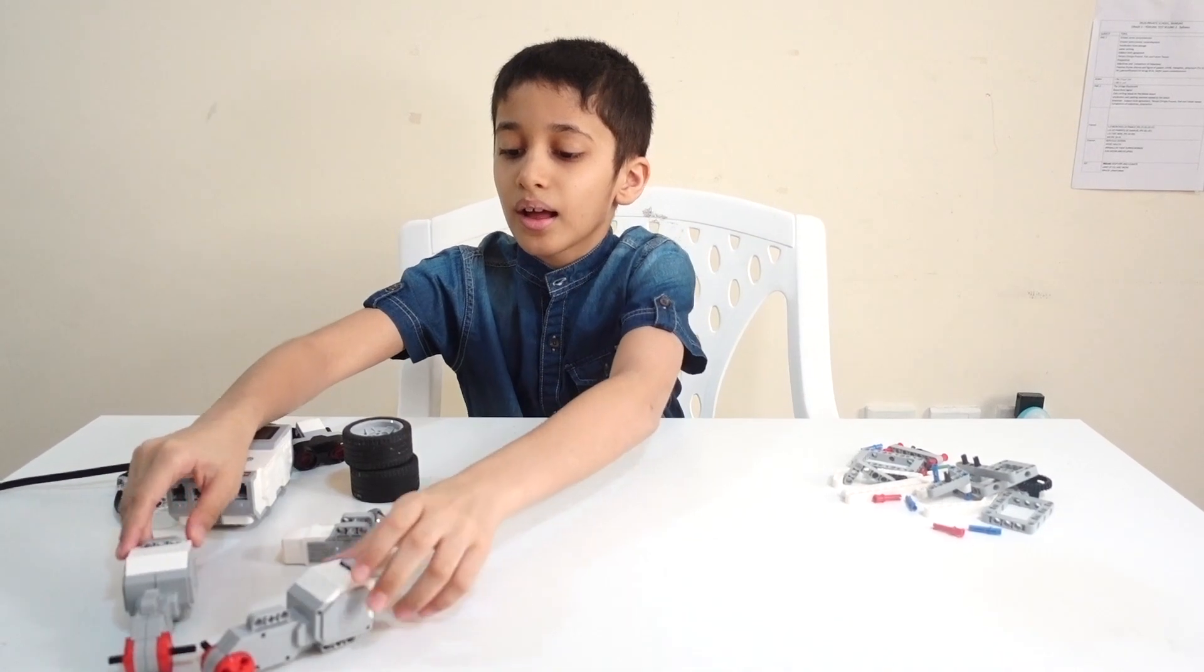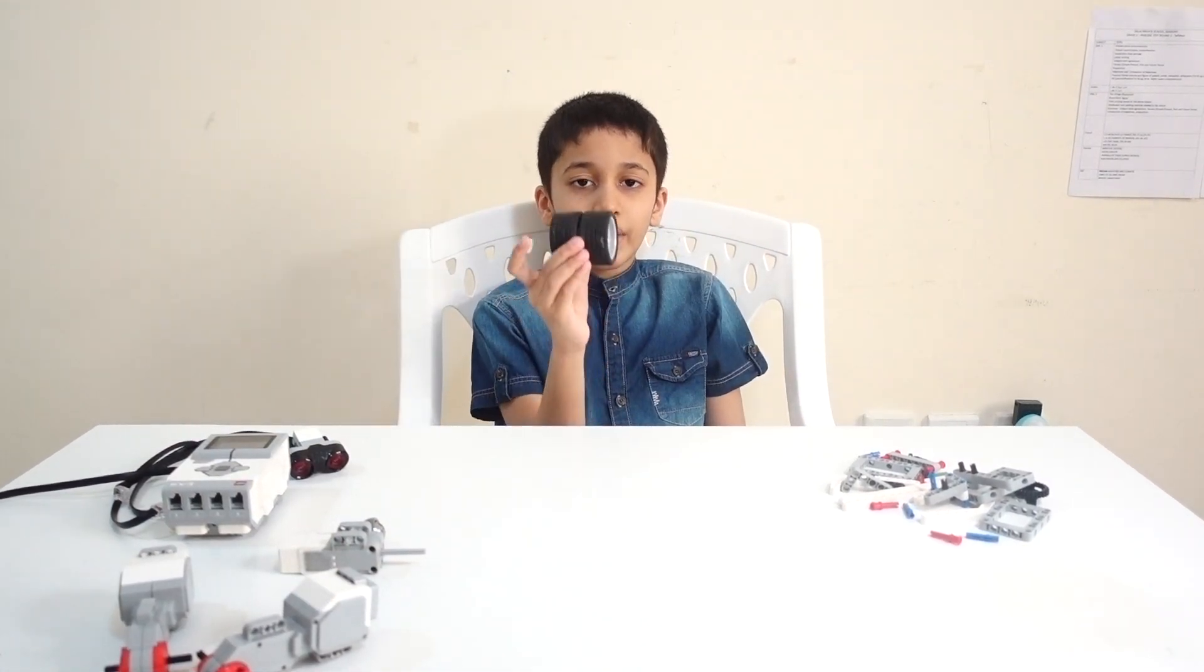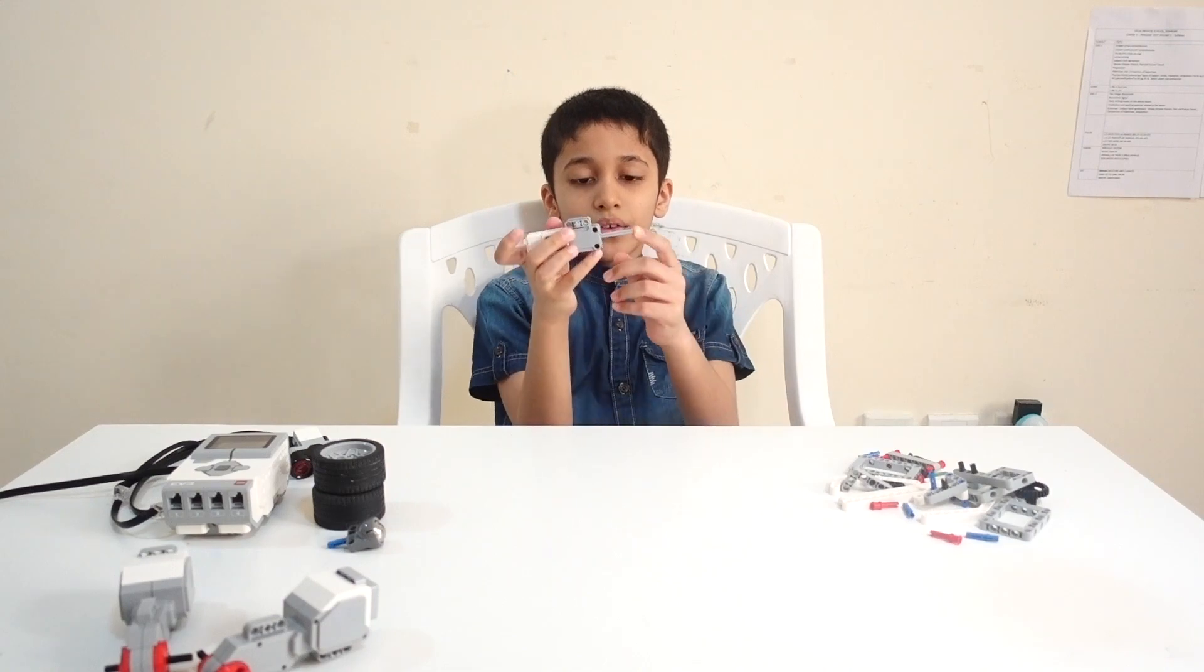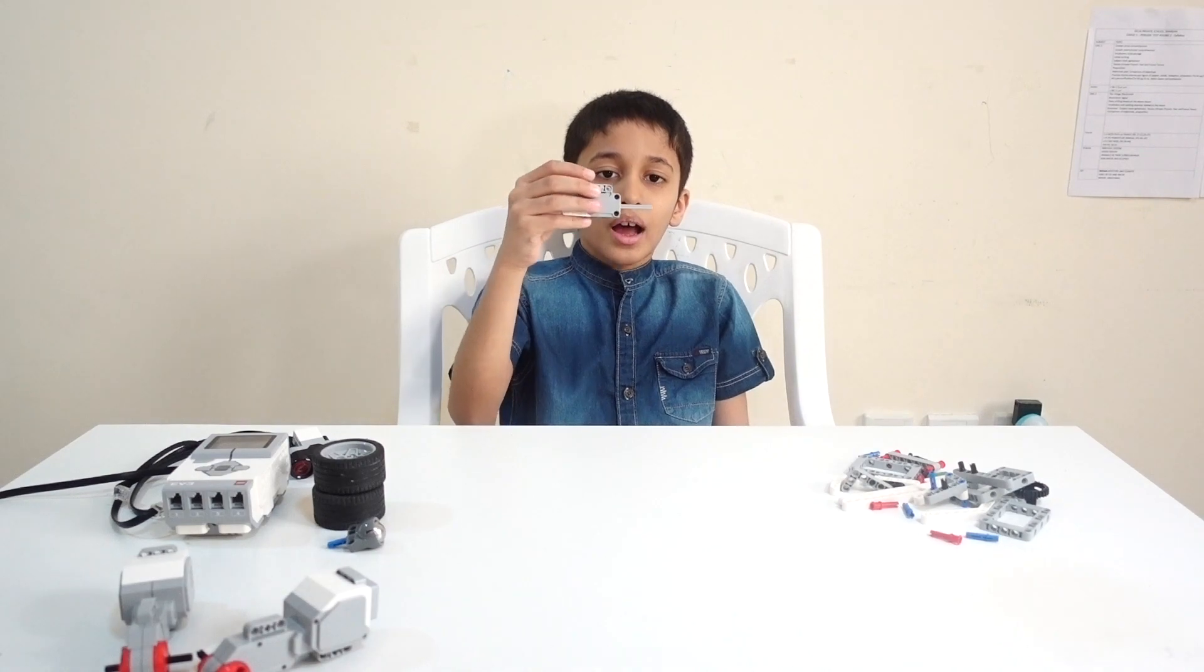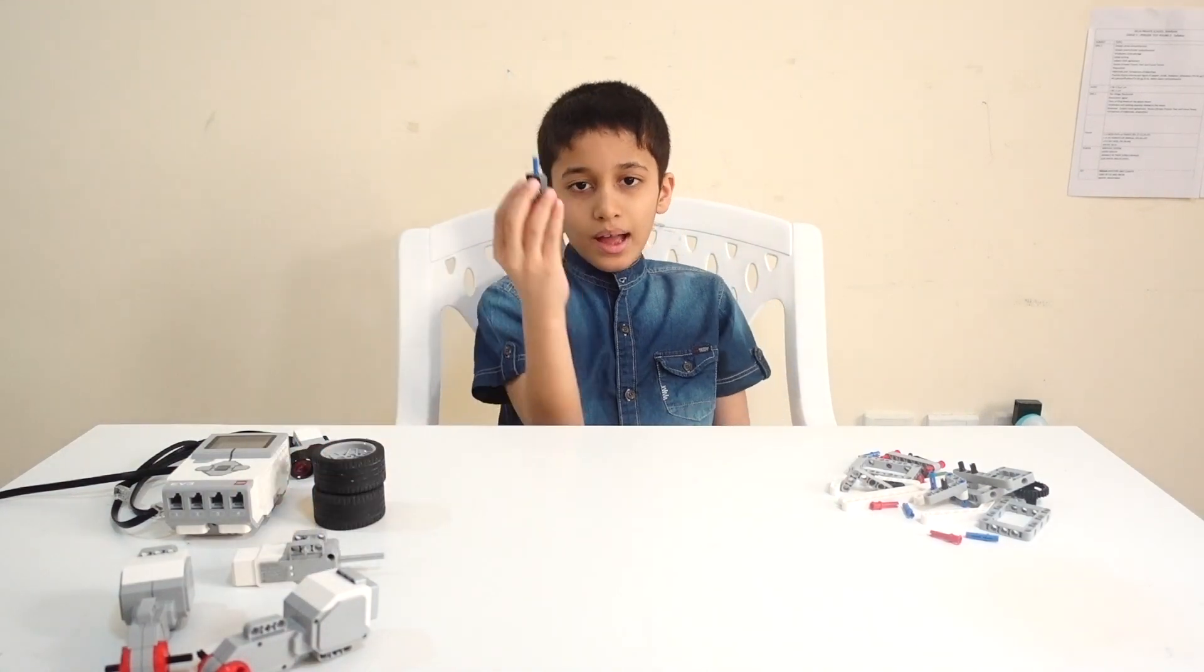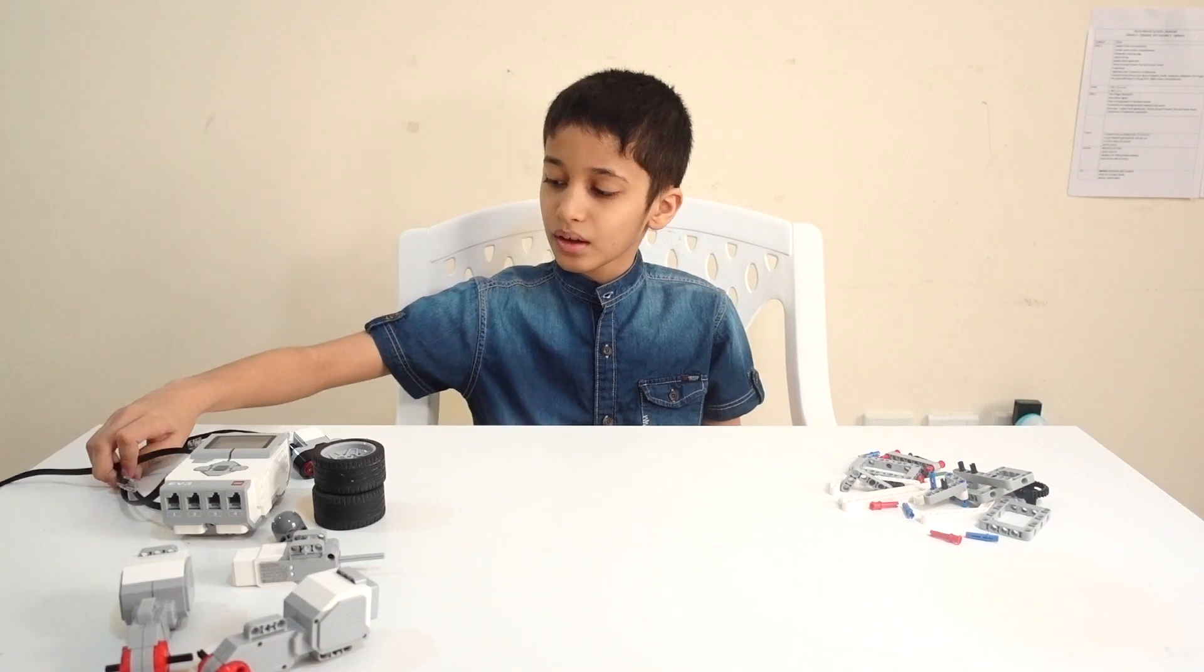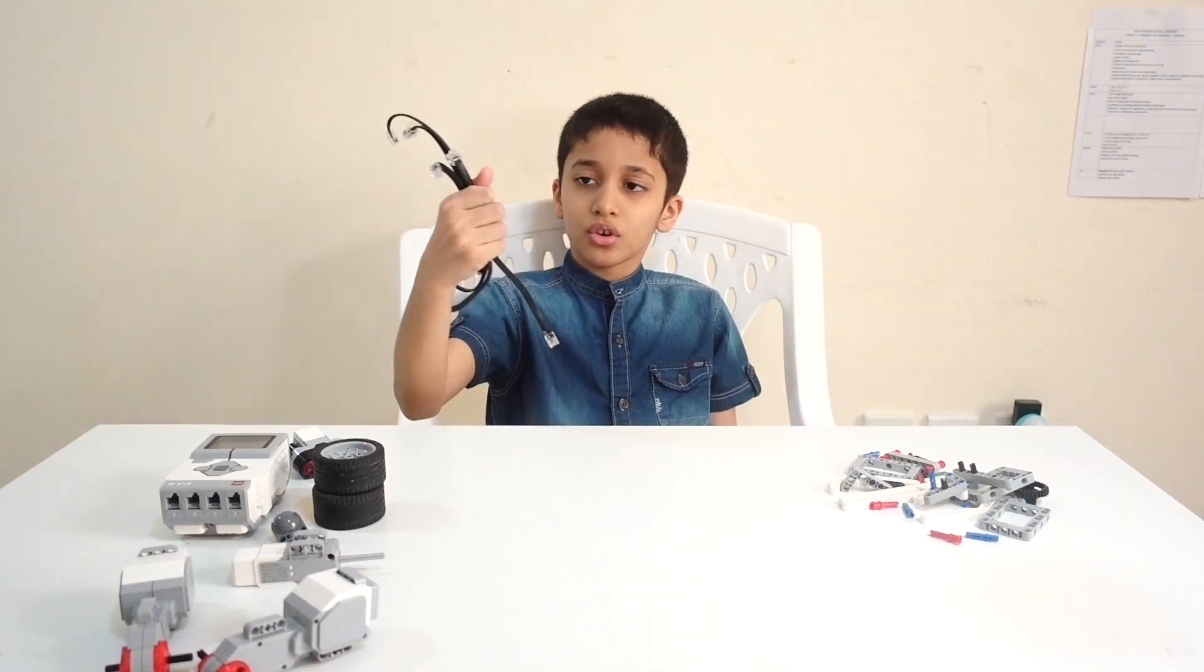And tires which we attach to the large motors, a medium motor where we attach the hand of the robot and it helps the hand of the robot to move, and we have a balancing wheel and other parts that connect the robot.